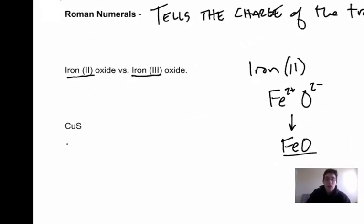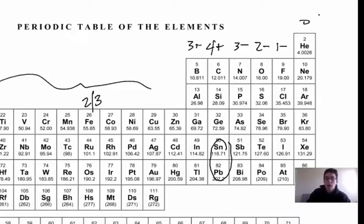Going the opposite direction, if you had a compound like CuS and you didn't know which metal ion copper was, well just look at the way this is written. We know that sulfur on the periodic table, right here number 16, is a 2- ion. It has to be 2-.